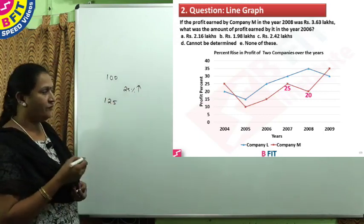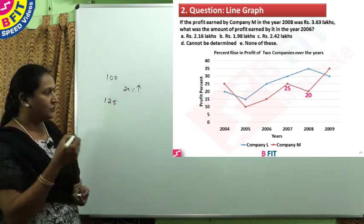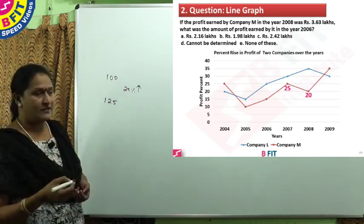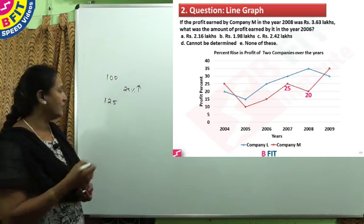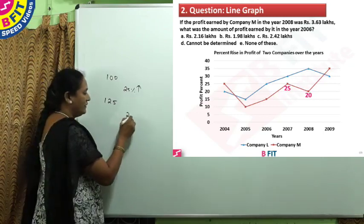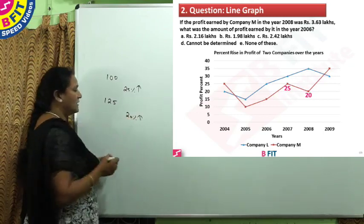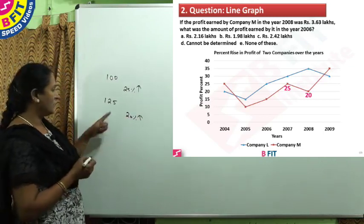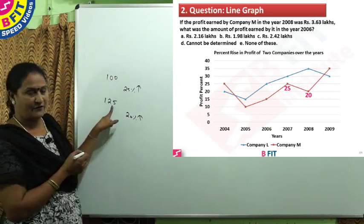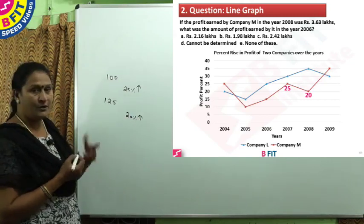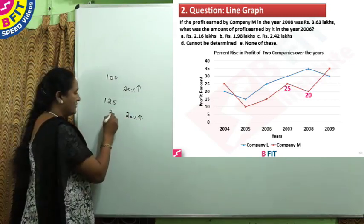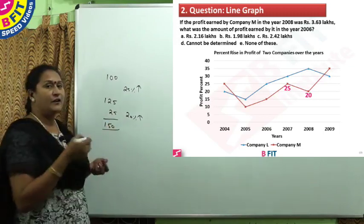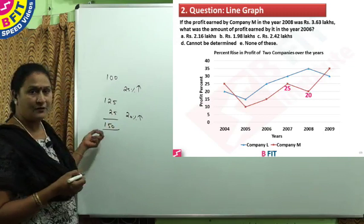If we take 100 for 2006, the 2007 profit will be 125. Now for 2008 there is a 20% increase. We find 20% of 125: 10% is 12.5, so 20% is 25. Adding 25 to 125 gives a profit for the year 2008 of 150.